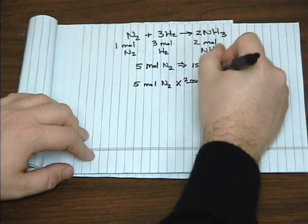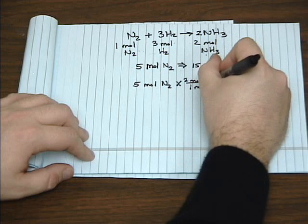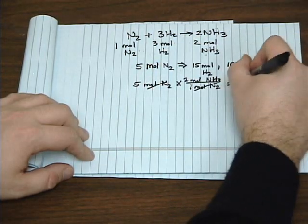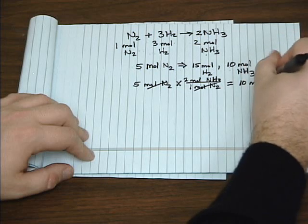So we can use that as our conversion factor. Again, we get 10 moles of ammonia.